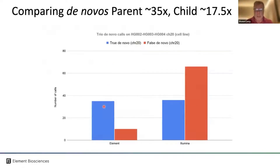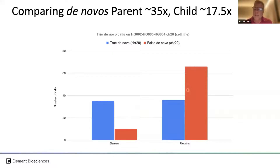Using a known truth-set trio — the Genome in a Bottle set HG002, HG003, and HG004 — focusing on chromosome 20 to keep data manageable: there are just under 40 true de novo calls on chromosome 20, which is accurate. However, the number of false de novo calls is significantly higher on Illumina. Although our sequencing costs are highly competitive, our sequencing quality and variant-calling accuracy allow the downstream filtering and annotation process to be much more streamlined, saving both cost and time.